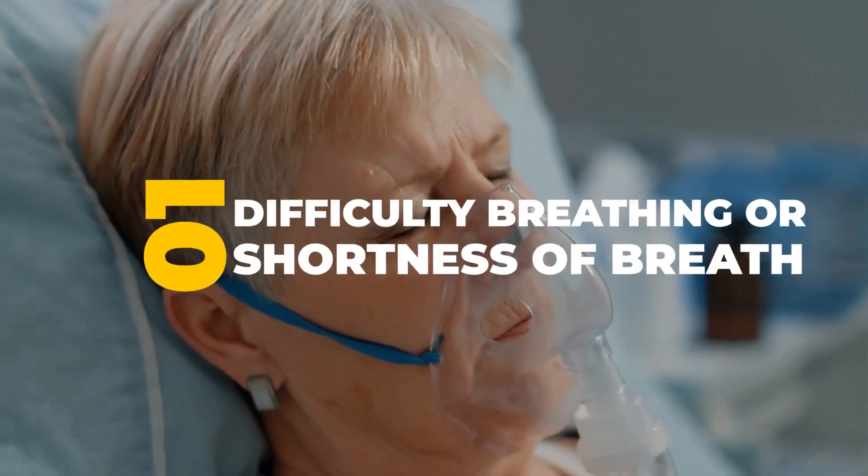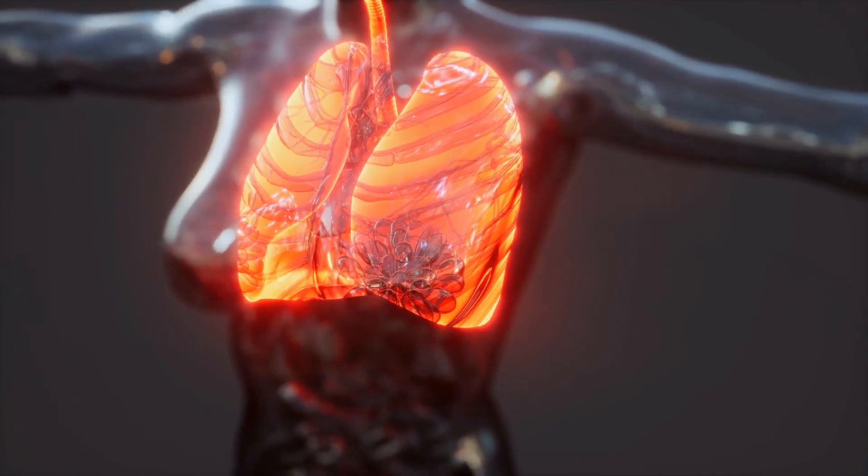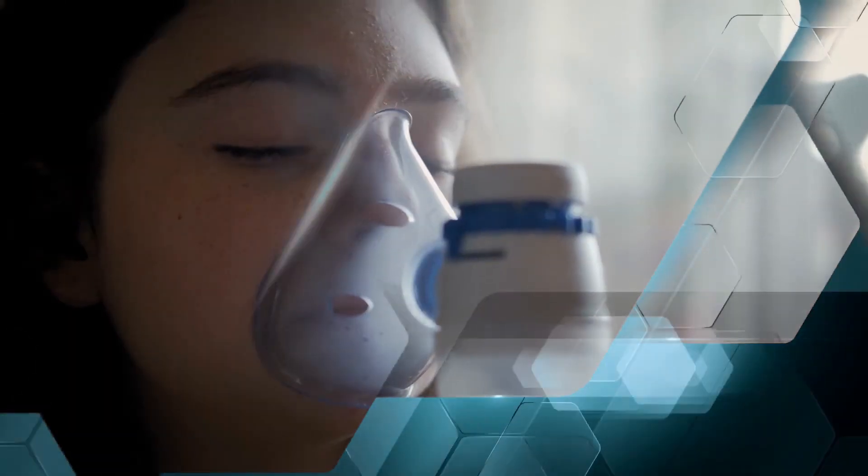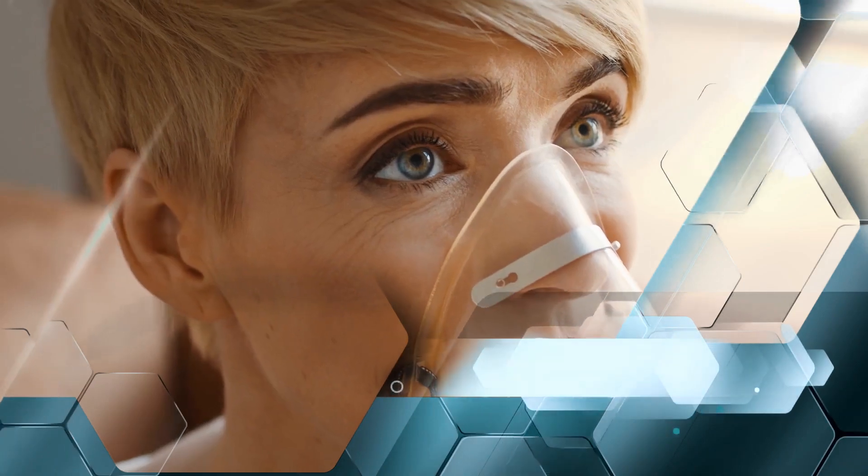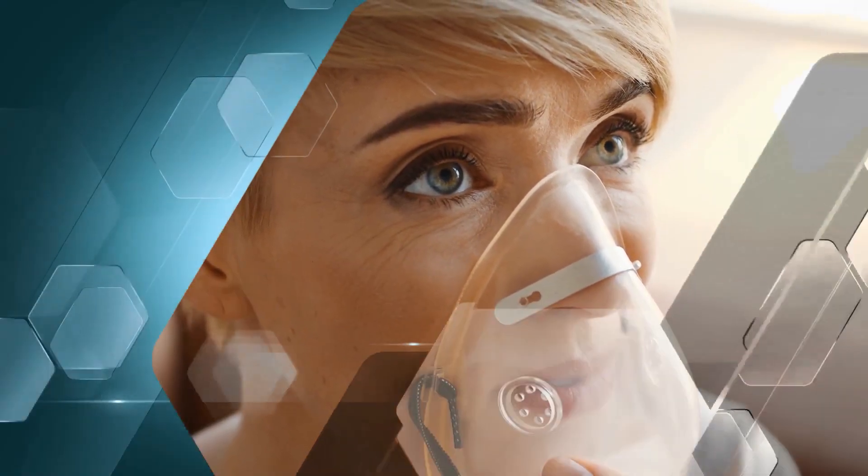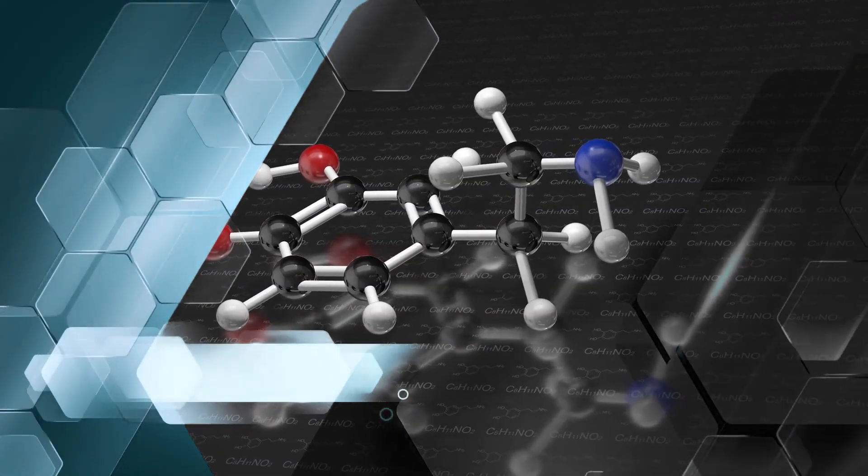Number 1. Difficulty breathing or shortness of breath. In the final serious part of this diabetic situation, your breathing may become difficult and shallow. This is called Kussmaul respiration, and it's your body's attempt to get rid of excess carbon dioxide and counteract the increasing acidity in your system.